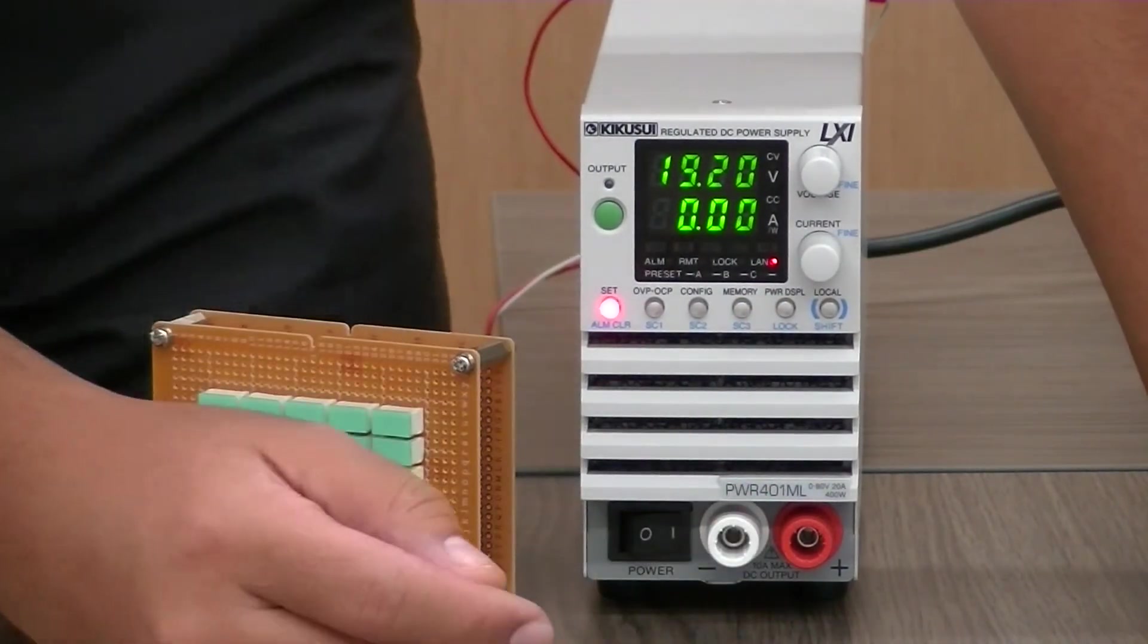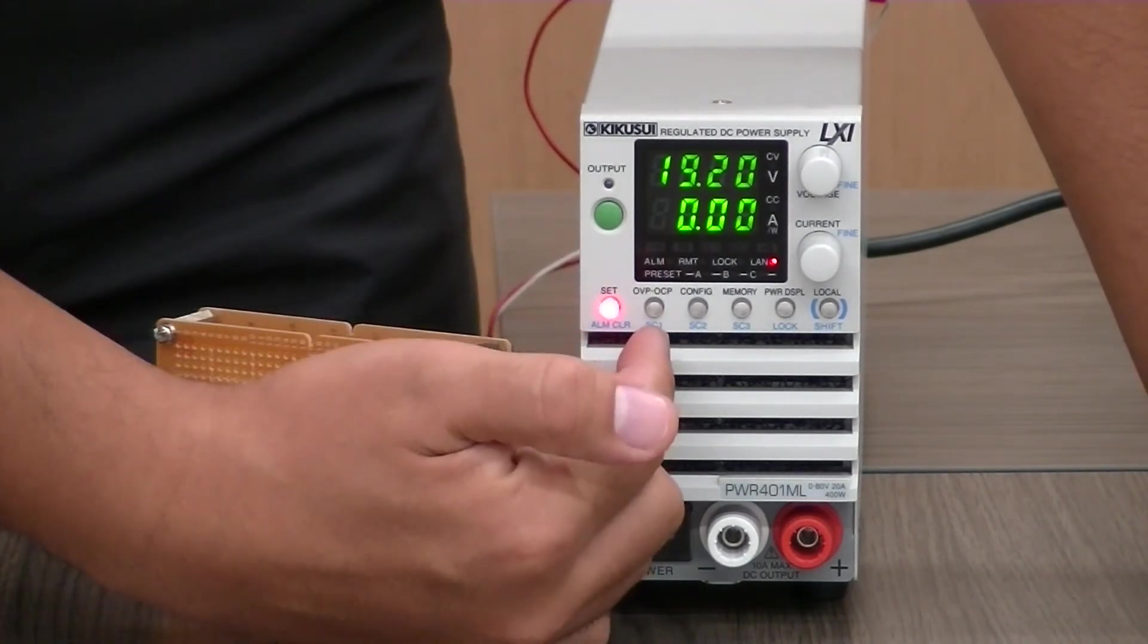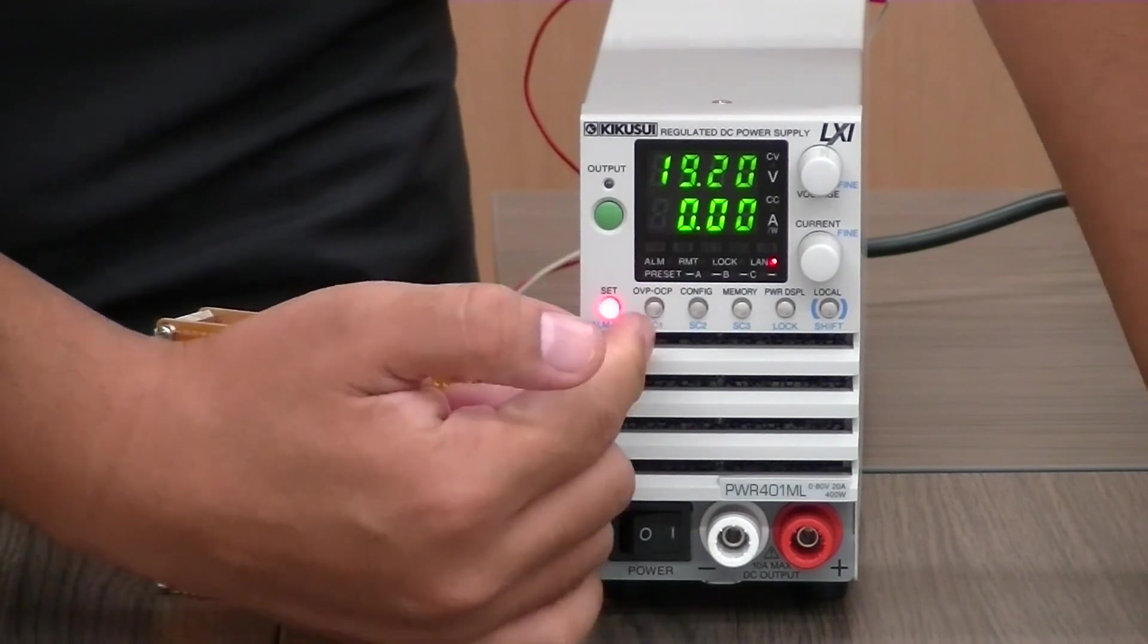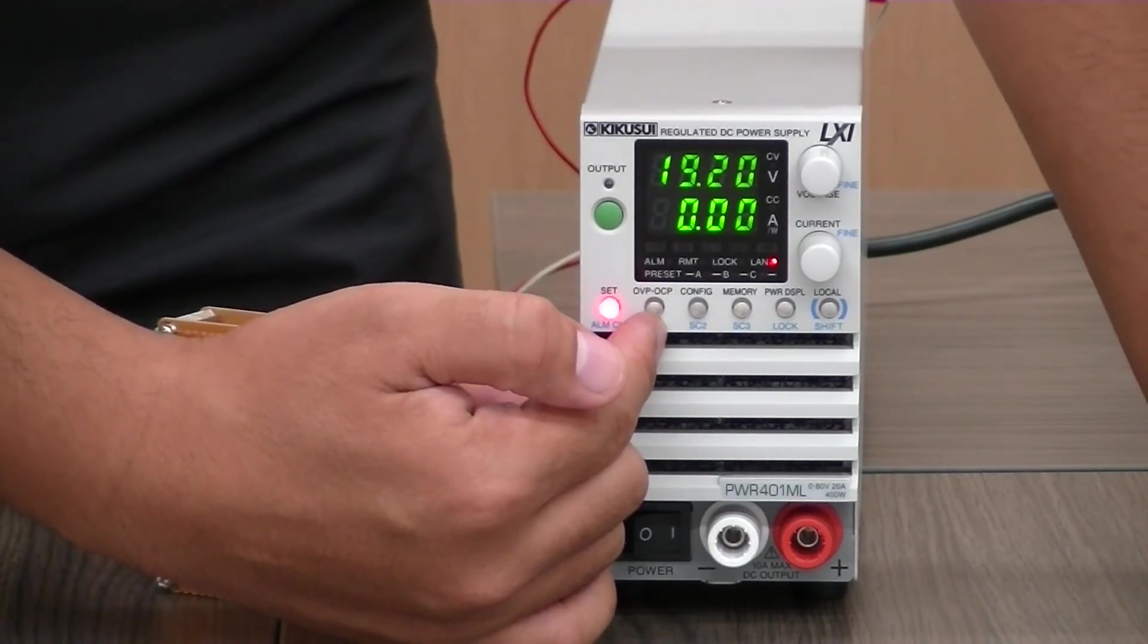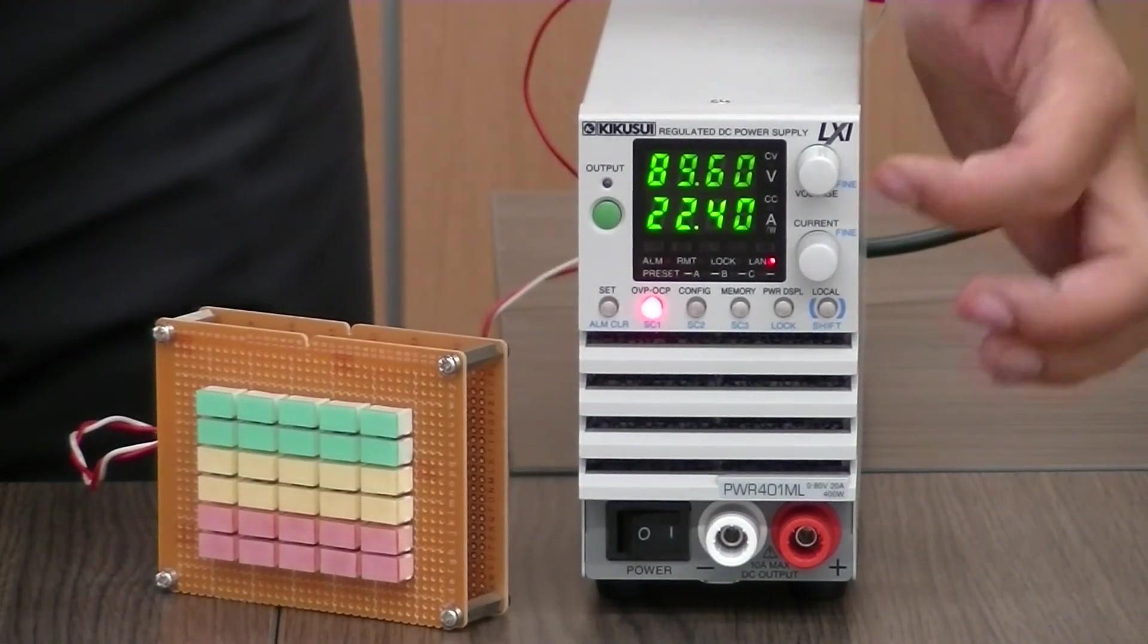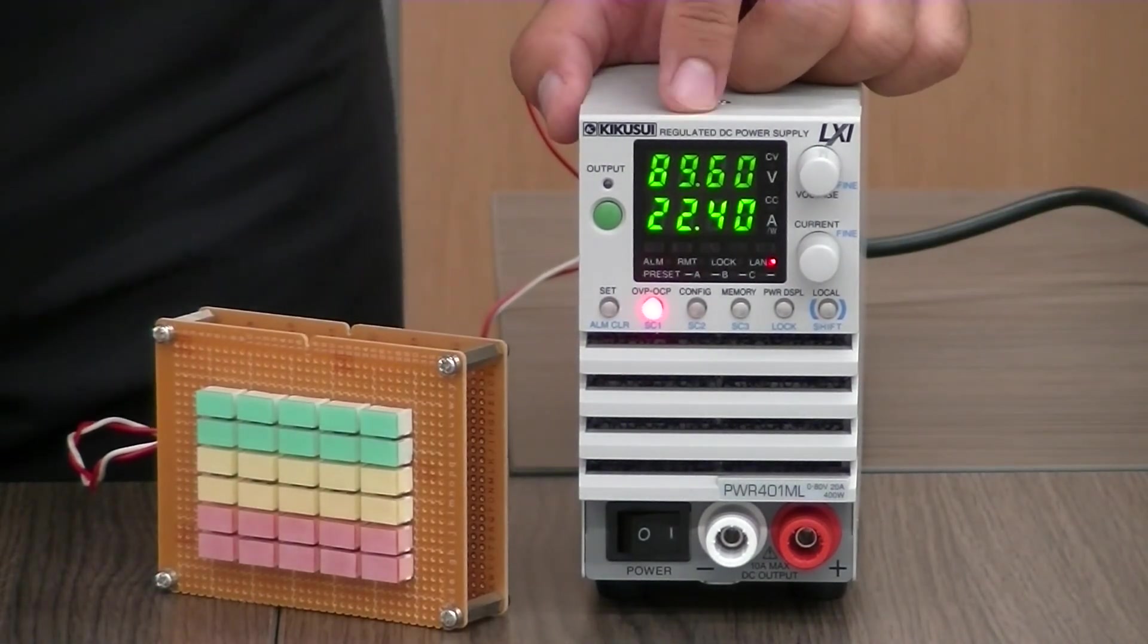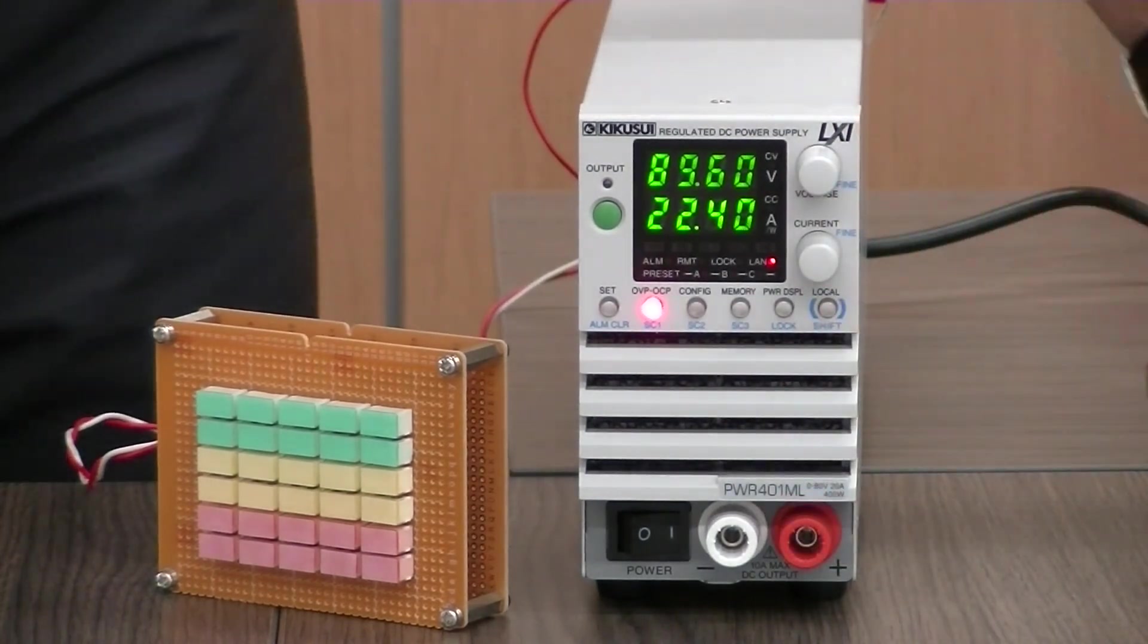Alright, and you can see the set button, protection button, over voltage protections, over current protections. So if I press this, this will show you the over voltage protections we set at maximum setting and current also at maximum setting.